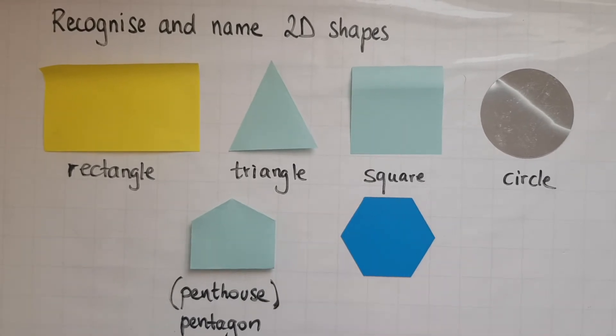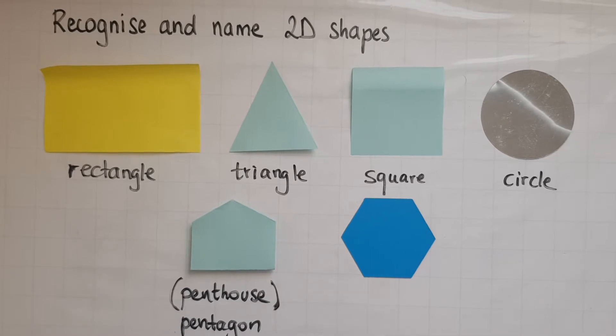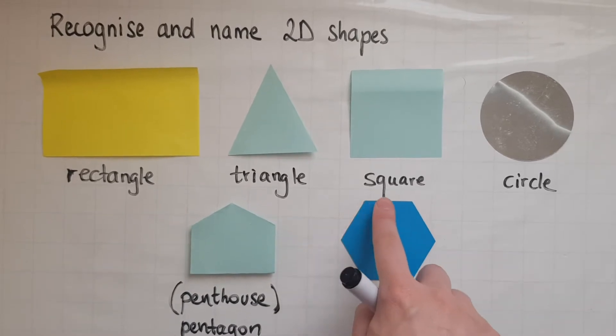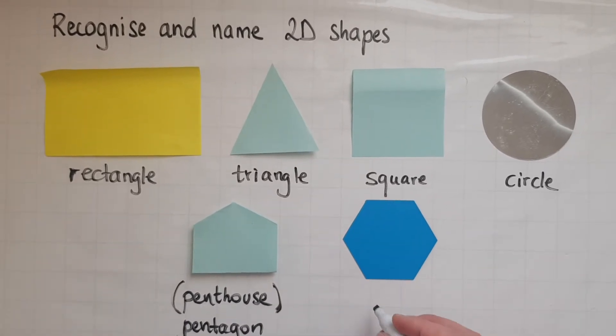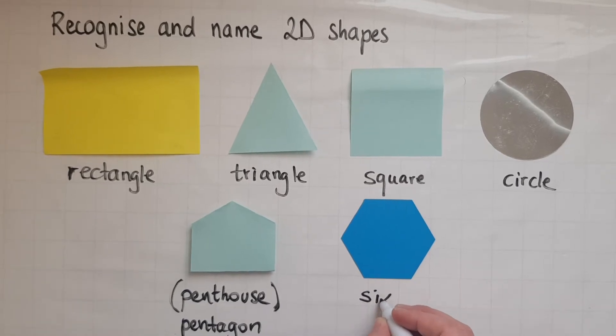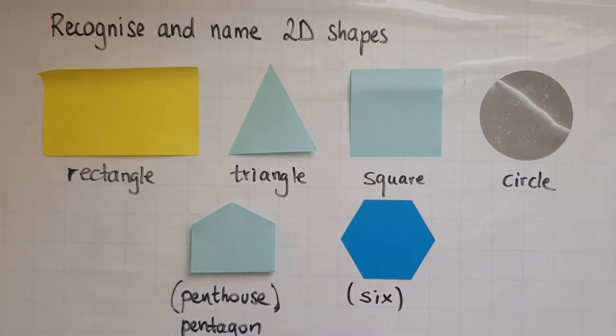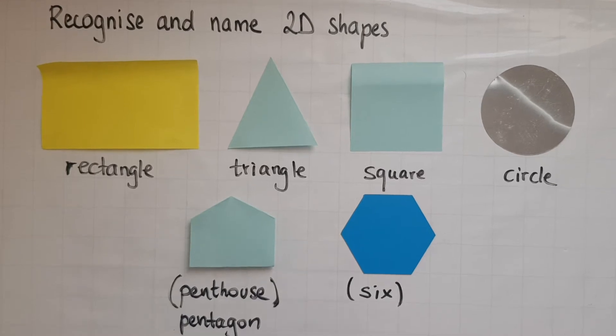And this other shape has one, two, three, four, five, six sides. We call it hexagon.